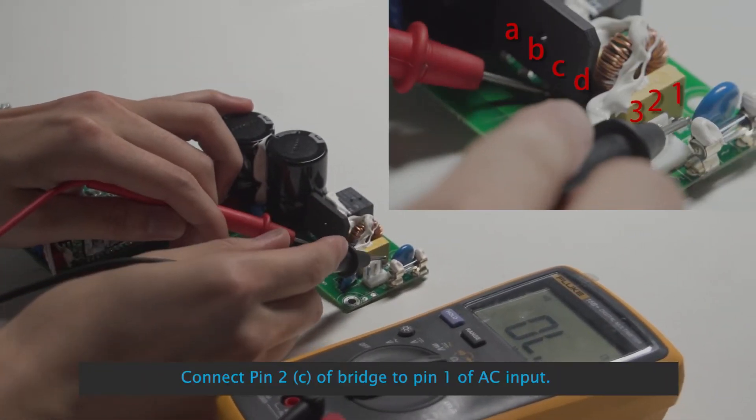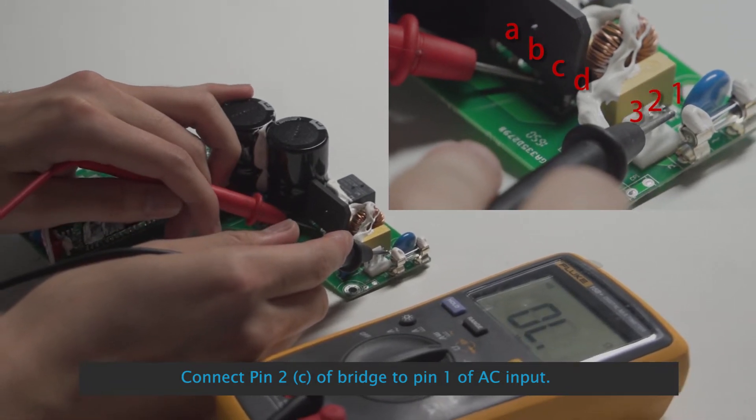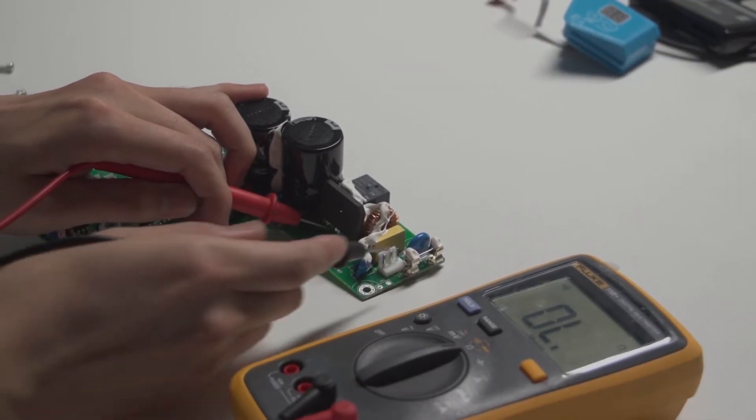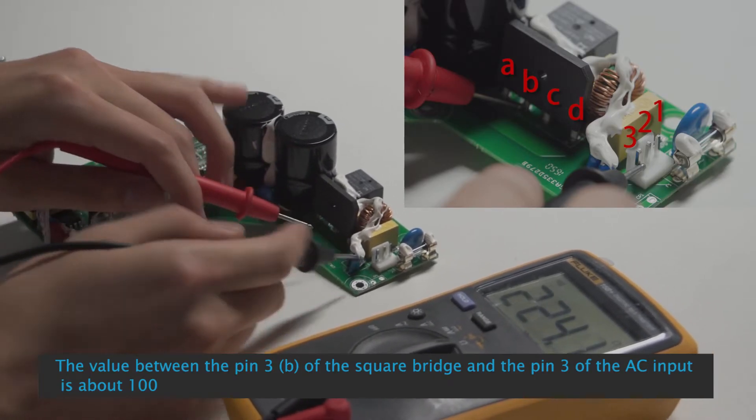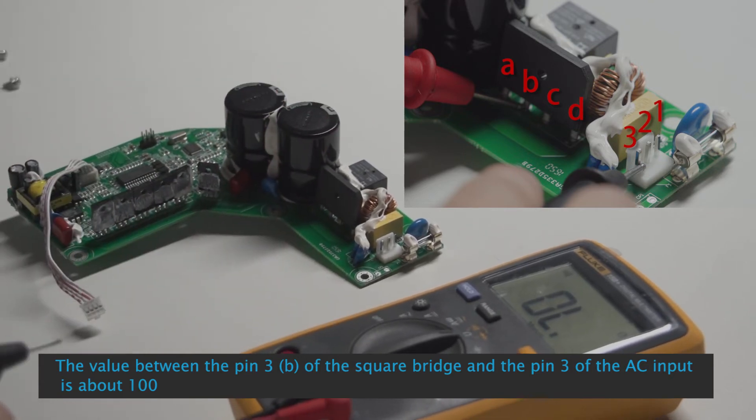Connect pin 2C of bridge to pin 1 of AC input. The value between pin 3B of the square bridge and pin 3 of the AC input is about 100.